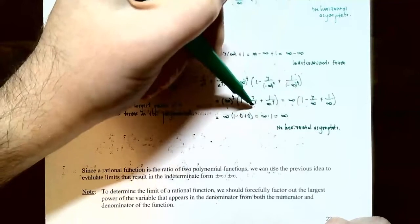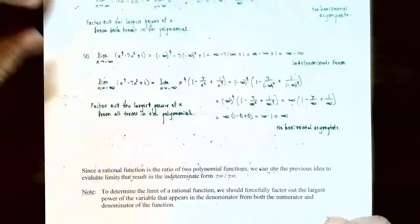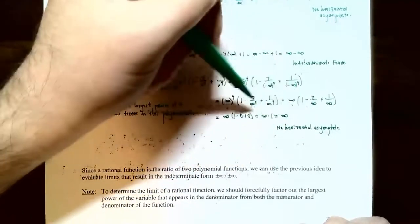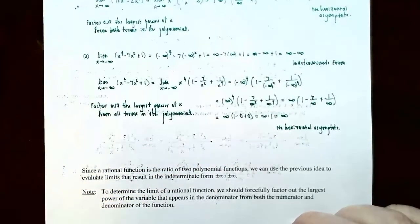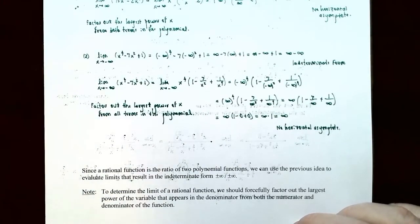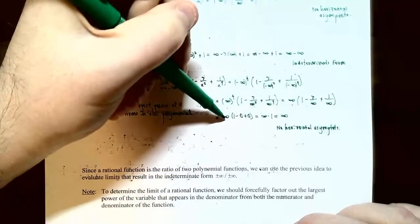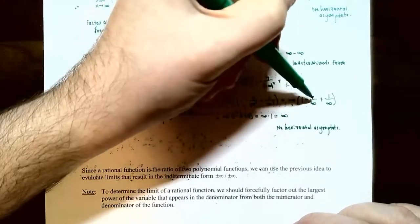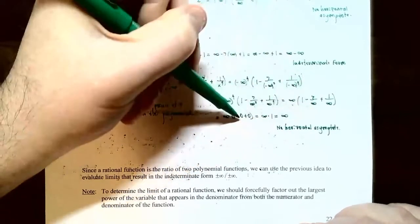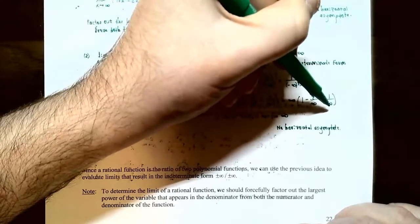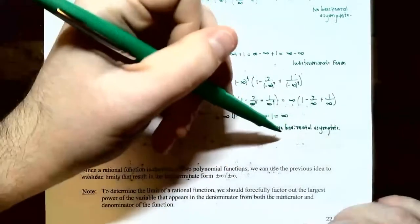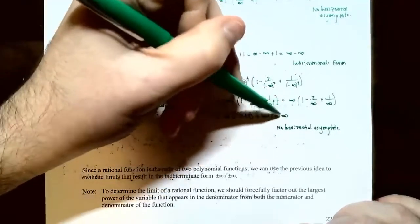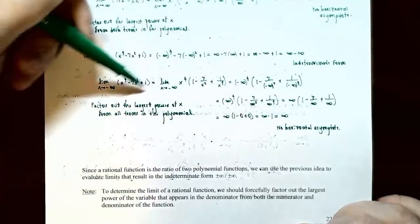Infinity to the fourth is infinity, and infinity to any positive power is infinity. So we have infinity times 1, which is infinity. Again, you have no horizontal asymptote because the y values are approaching infinity for this polynomial function.